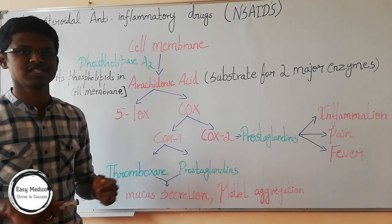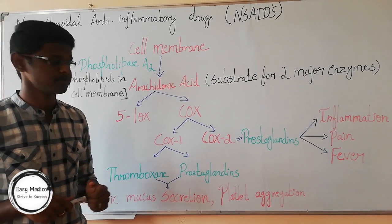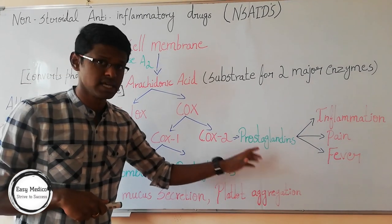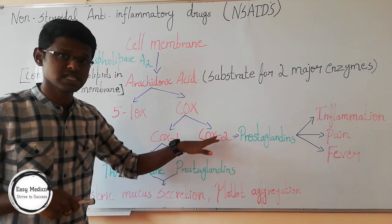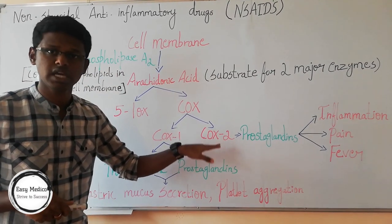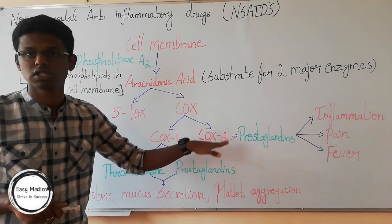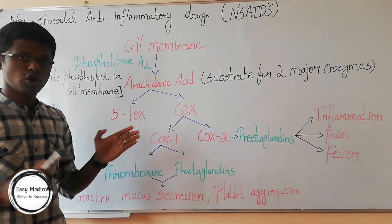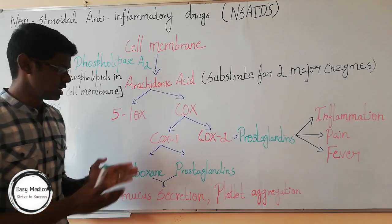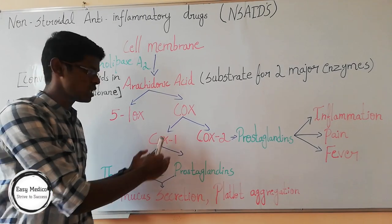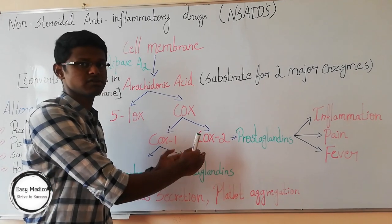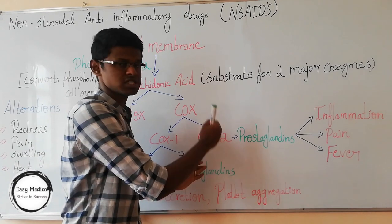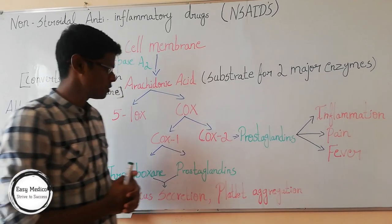Cyclooxygenase I is also known as the housekeeping enzyme, which is responsible for various normal functions of the body. Cyclooxygenase II produces prostaglandins and is induced only during inflammation or pathological conditions. So, COX-1 is the common baseline enzyme, and COX-2 is the one which occurs only during inflammation.